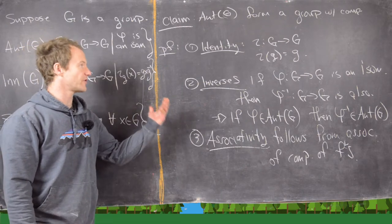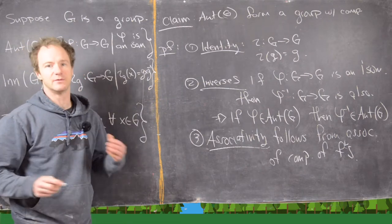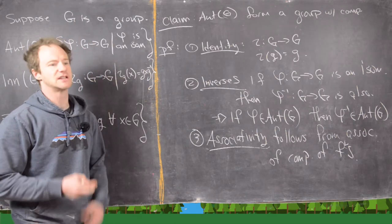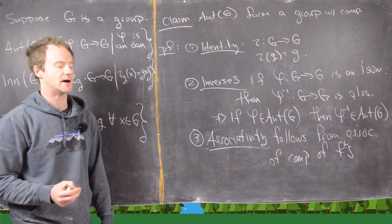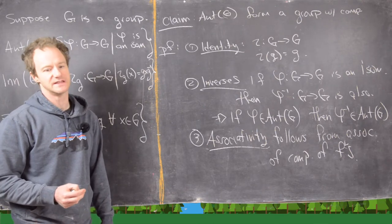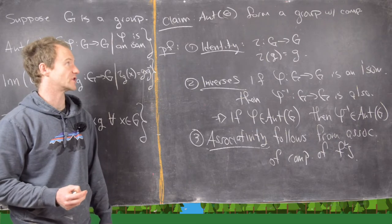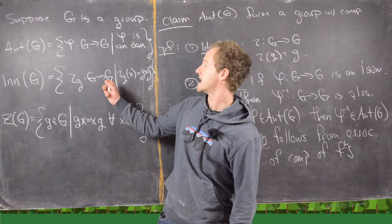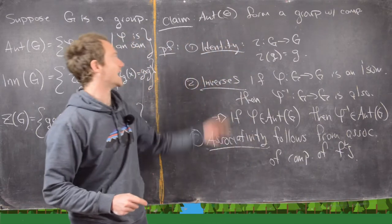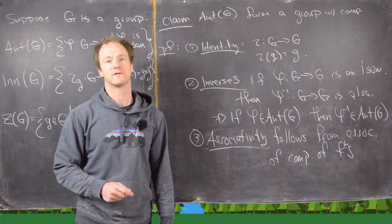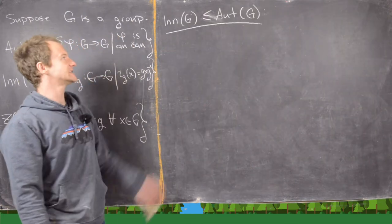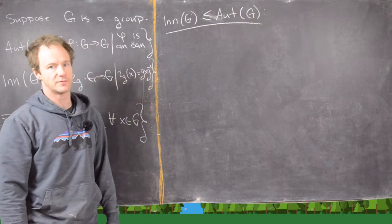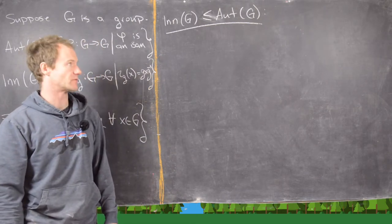Another thing we need to check is closure. It's clear that the composition of two automorphisms is going to give you a new automorphism, so we're good there. So now we will show that the set of inner automorphisms forms a subgroup of the group of automorphisms of G.